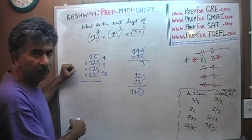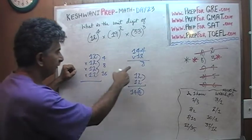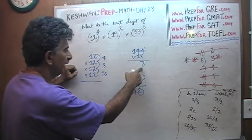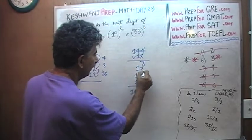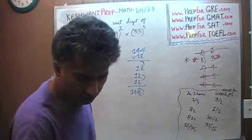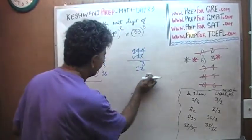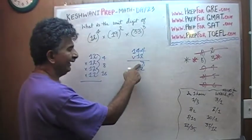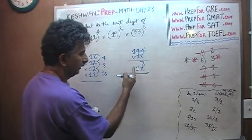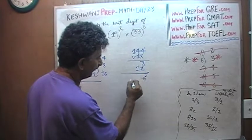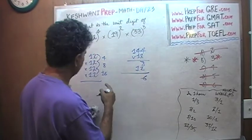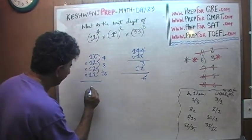And then whatever that answer is, we don't actually have to do it out. Whatever that answer is, which ends in an 8, if you multiply a number that ends in an 8 by 12, the product of these two numbers should end in a 6 because 8 times 2 is 16. So, this whole thing ends in a 6.